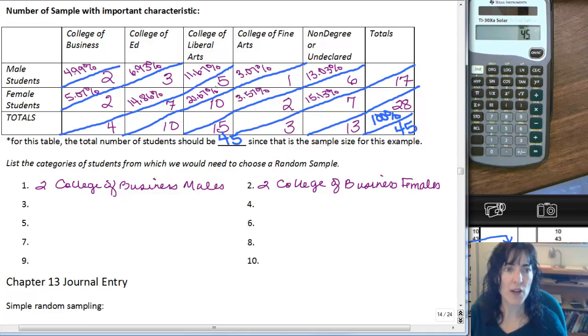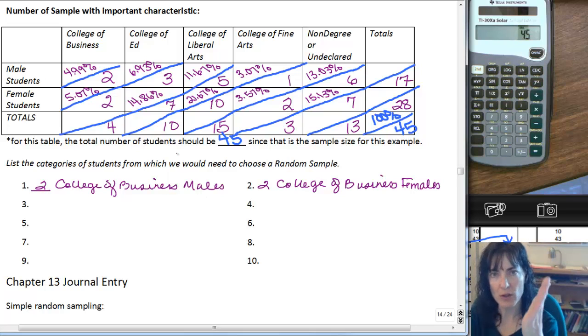That takes care of the College of Business column. Now I need to do the same for College of Ed, College of Liberal Arts, College of Fine Arts, and Undeclared Non-Degree Seeking students. I'll list how many I need from each category. Remember, we want a 45-person sample stratified based on two important characteristics: gender and college of their major.